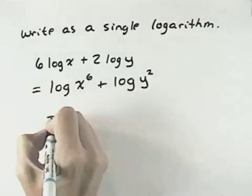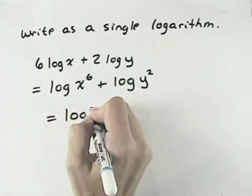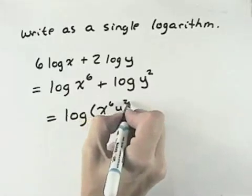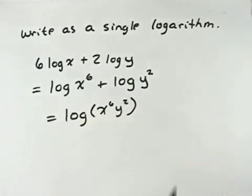And now because we're adding two logarithms together, we can actually combine them as a product, and it would be the log of the x to the 6th times the y to the 2nd power. And now we've expressed this as a single logarithm.